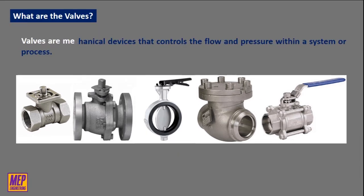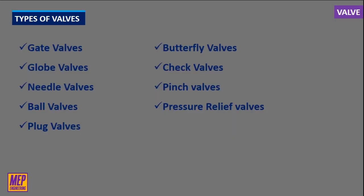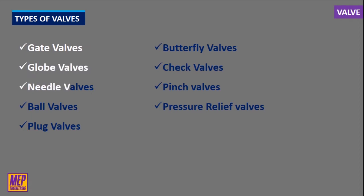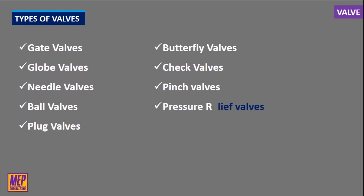What are valves? Valves are mechanical devices that control the flow and pressure within a system or process. There are various types of valves used in almost all types of industries to regulate the flow of liquid or gas. Different types of valves available include gate valves, globe valves, needle valves, ball valves, plug valves, butterfly valves, check valves, pinch valves, pressure relief valves, etc. Each of these types has a number of models with different features and functional capabilities.